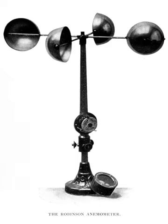A simple type of anemometer was invented in 1845 by Dr. John Thomas Romney Robinson of Armagh Observatory. It consisted of four hemispherical cups mounted on horizontal arms, which were mounted on a vertical shaft. The air flow past the cups in any horizontal direction turned the shaft at a rate that was roughly proportional to the wind speed.